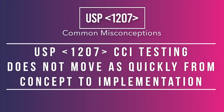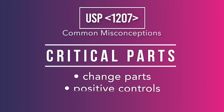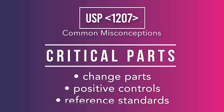It is generally assumed that USP 1207 testing will be quickly implemented and completed — this is not the case. There are three critical parts of a successful CCI program that impact the time schedule: change parts, positive controls, and reference standards.